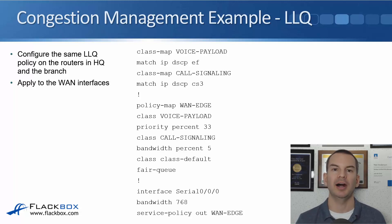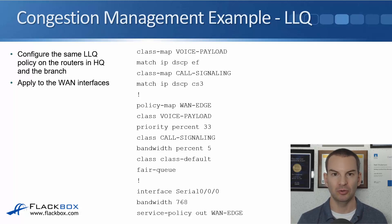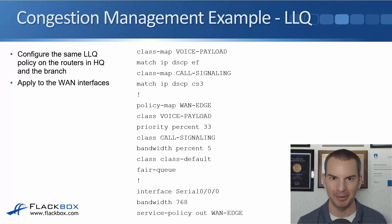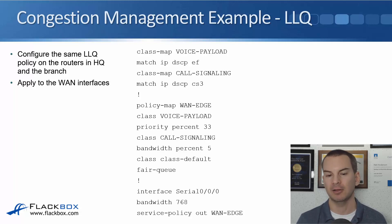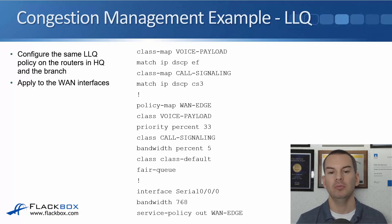Finally, we need to apply the policy to the interface. If you're ever working with QoS in the real world, this is the part that's easy to forget — you do the class map, then the policy map, and then think you're done. But you have to apply the service policy or nothing happens. This is done under the interface. In our example, it's interface serial 0/0/0. We say bandwidth 768 — you have to do this if you're using priority percent so it knows what the percent refers to. 33% of 768 is 256, that's where it gets the value. Then finally, to apply it, we say service-policy out WAN-edge, which is the name of the policy map.